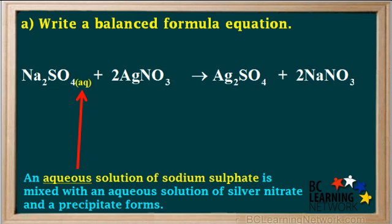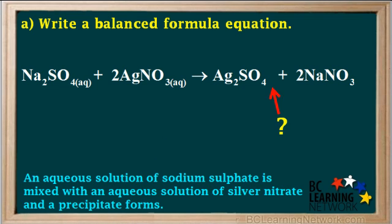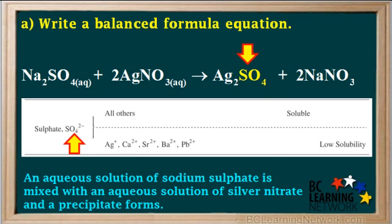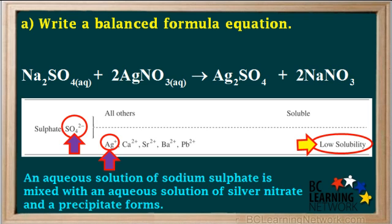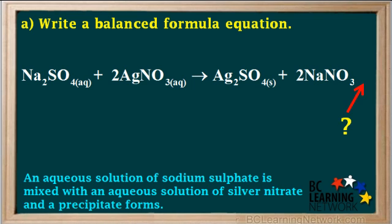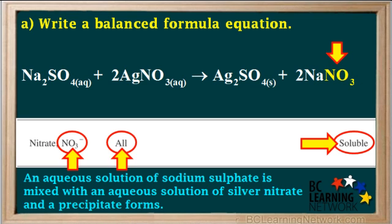We are told that the sodium sulfate is aqueous, so we write the subscript AQ here. The silver nitrate is also aqueous, so we write the subscript AQ here as well. To find out whether silver sulfate is aqueous or solid, we consult a solubility table. Looking at the sulfate section, when silver ions combine with sulfate to form silver sulfate, silver is in the low solubility group. Low solubility means it will form a precipitate, which we indicate with the subscript S for solid. Looking up nitrate on the solubility table, all nitrate compounds are soluble. Therefore, sodium nitrate is soluble, and we indicate that by writing the subscript AQ at the end of its formula.